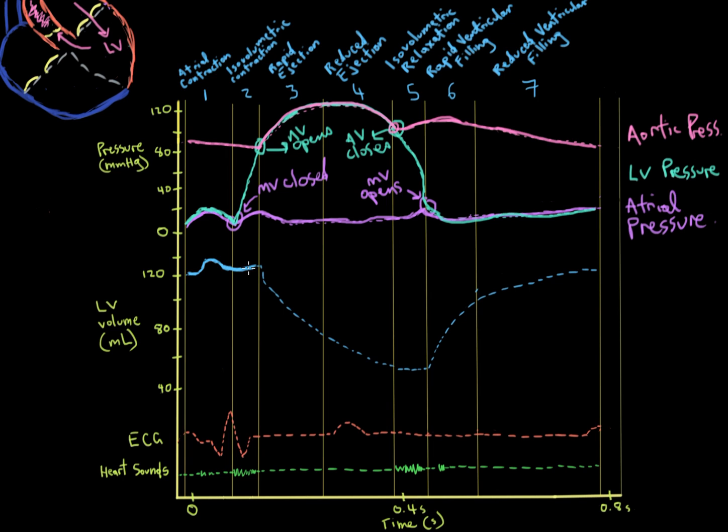So now we're past atrial contraction, we're past isovolumetric contraction, because remember at this point the ventricle is sealed off by both valves and it's contracting. Then once it gets into rapid ejection phase, a lot of blood ejects out of the aortic root through the aortic valve into the rest of the body. We get this drop in ventricular volume. Notice how the shape of the curve drops rapidly initially and then sort of levels off.